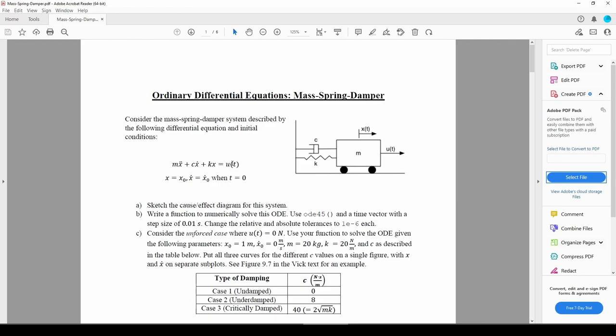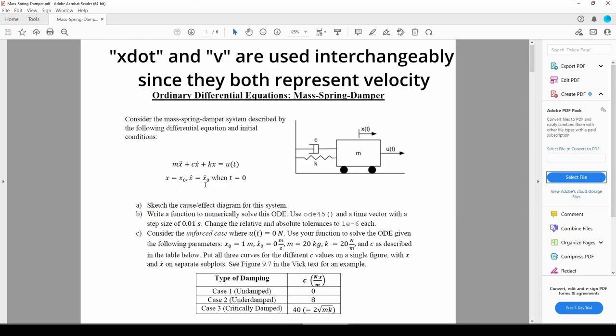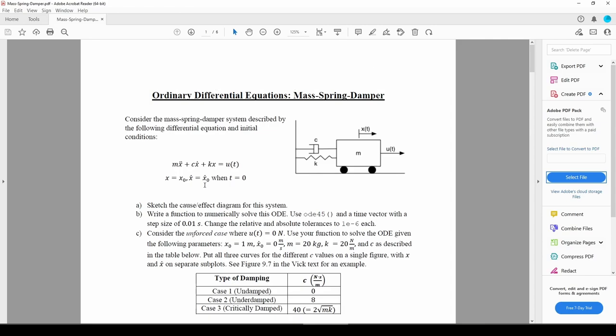Because this is a second order ODE, we need two initial conditions. We need to specify the mass's initial position and velocity. For now, we'll just use the placeholders x0 and x dot 0, or alternatively v0, to represent the mass's initial position and velocity.